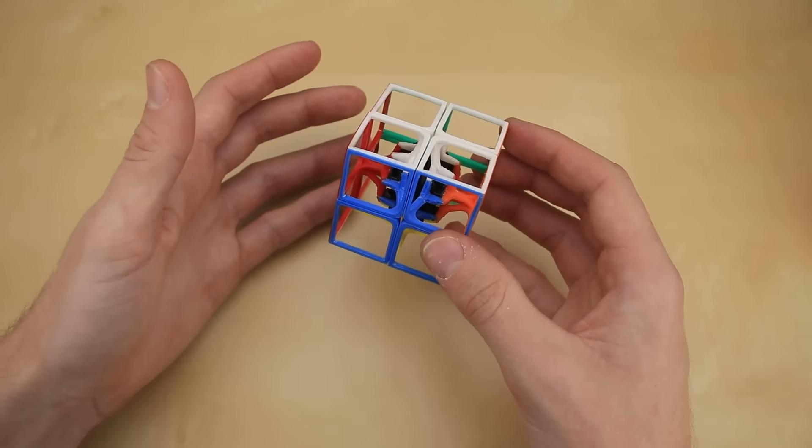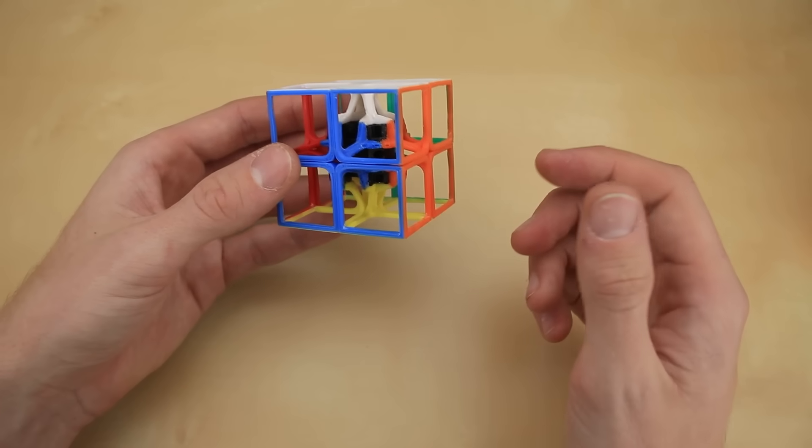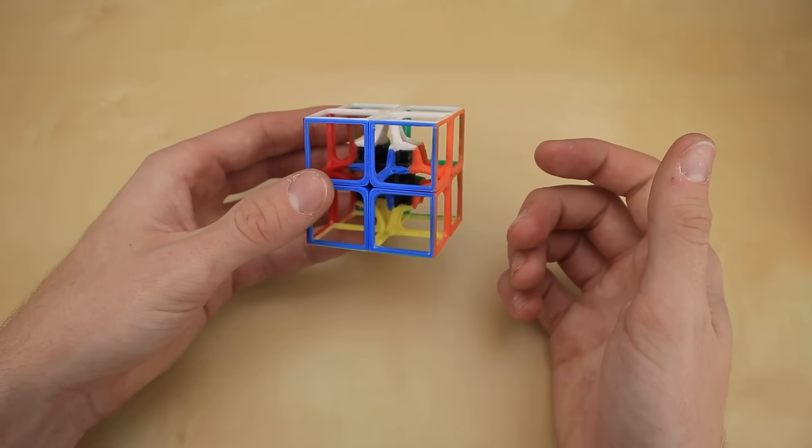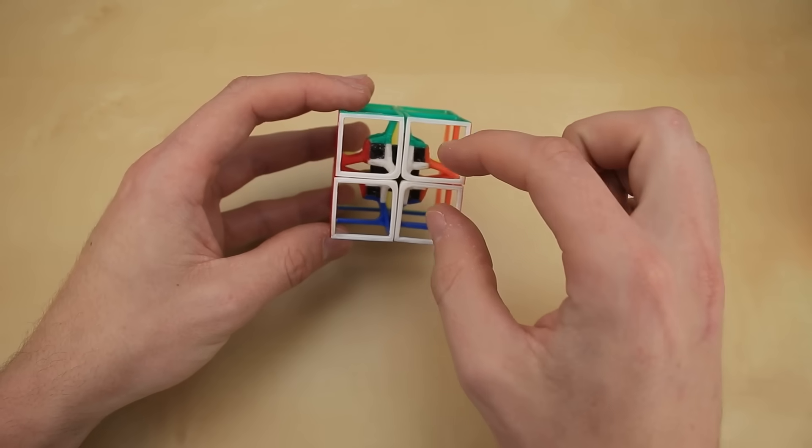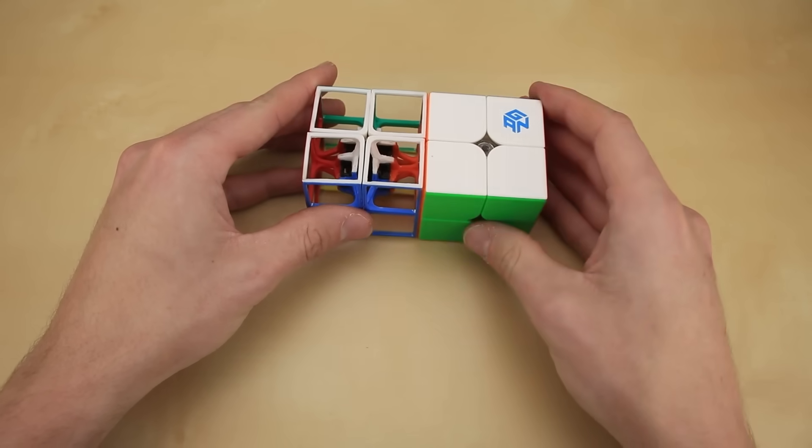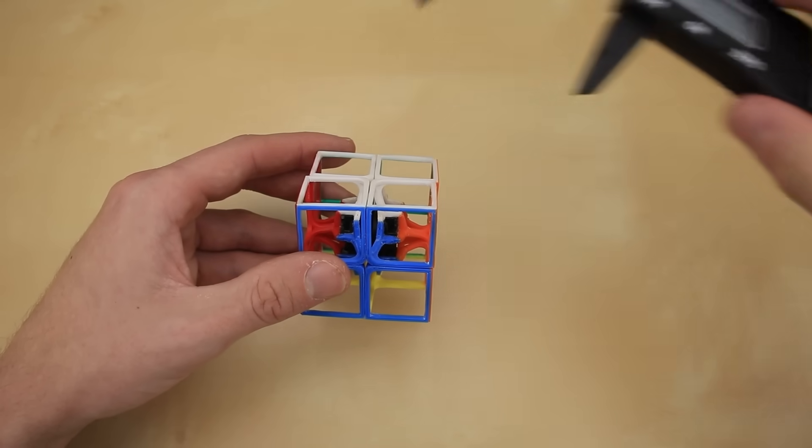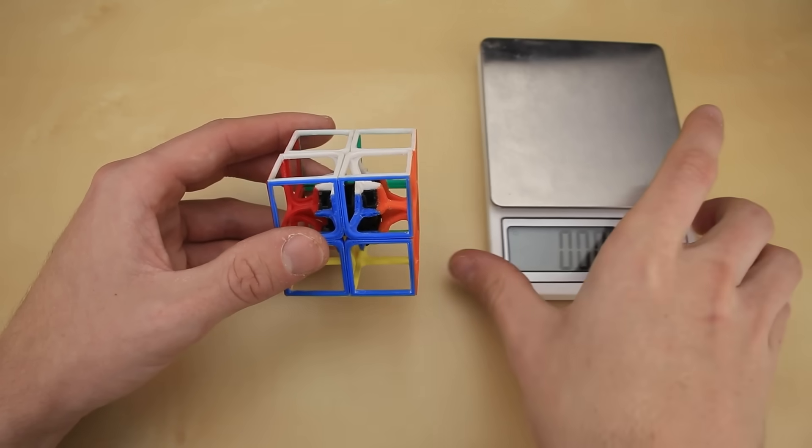But I know there's still one more burning question on all of your minds. How much does it weigh? Well, first, let's make sure it meets all the other requirements for the world's lightest 2x2. You've already seen that it's fully functional. It's made out of plastic, the plastic core plus the 3D printed pieces, and it is the same size as a normal 2x2, as you can see here. It's pretty much exactly 50 inches, as you can see. So let's break out the scale and see how much it weighs.